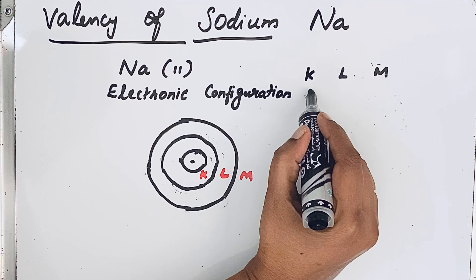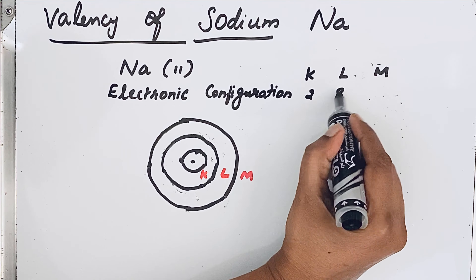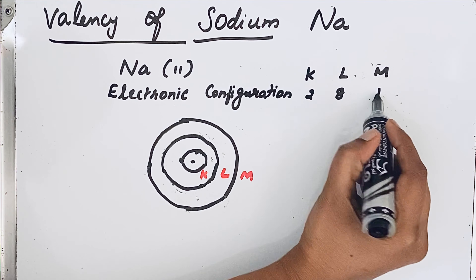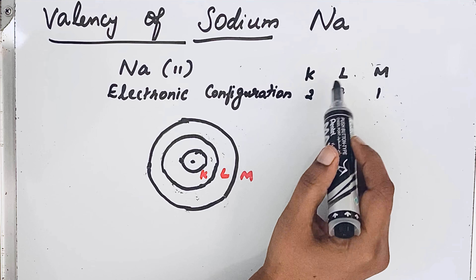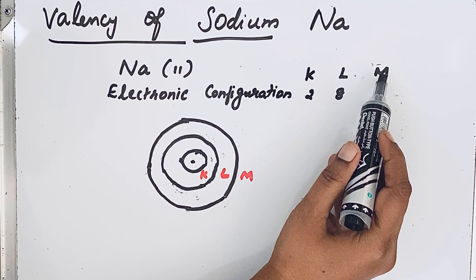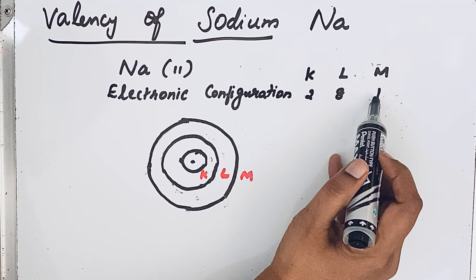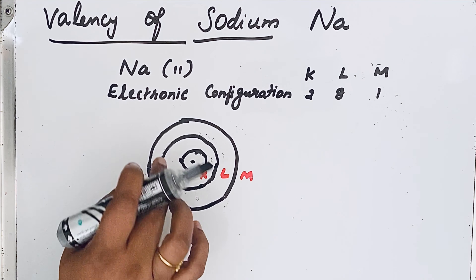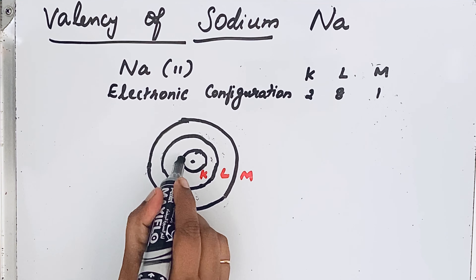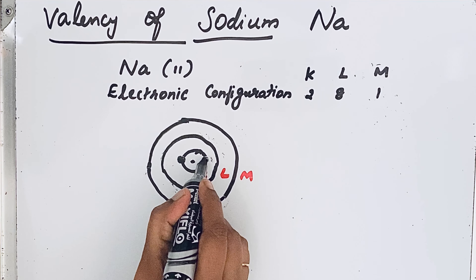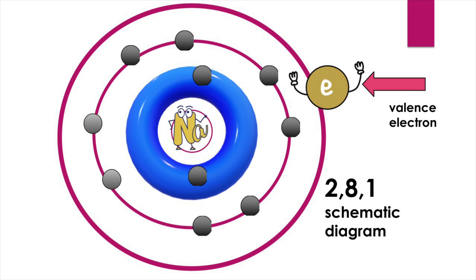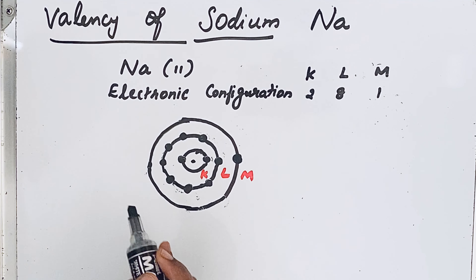So K=2, L=8, M=1 — that means in the K shell 2 electrons, in the L shell 8 electrons, and in the M shell 1 electron. This we can show here: 2 electrons in K shell, 8 electrons in L shell, and only 1 electron in M shell.